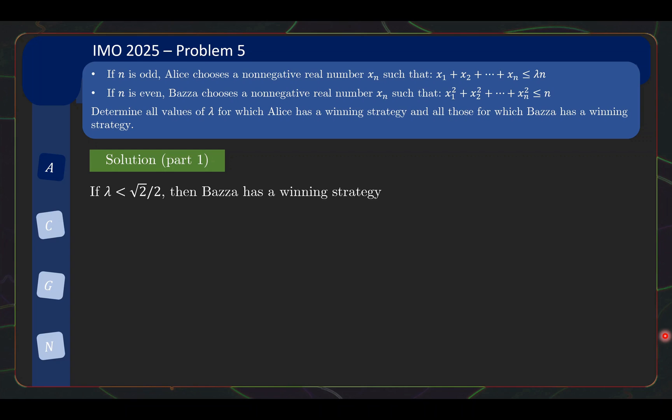Namely that if lambda is less than square root 2 over 2, then Bazaar has a win strategy. And the win strategy is as follows: on turn 2k, Bazaar simply places square root of 2 minus the square of whatever Alice just played. So we need to do a few things to check that this works. So firstly, we note that on turn 2k plus 1, Alice's budget is at most this. So the total budget given is lambda times 2k plus 1, so this is the total budget. And then you subtract away what is accumulated in pairs.